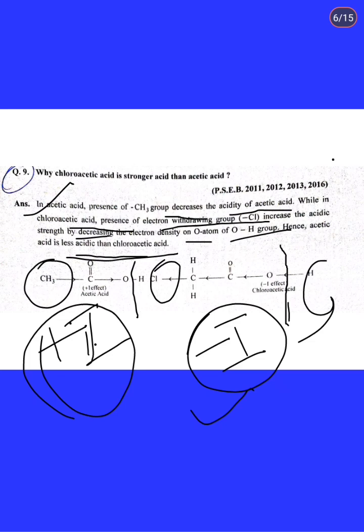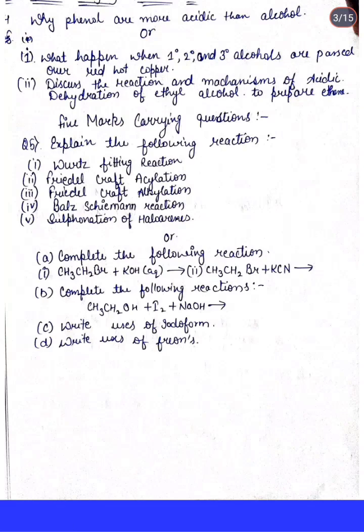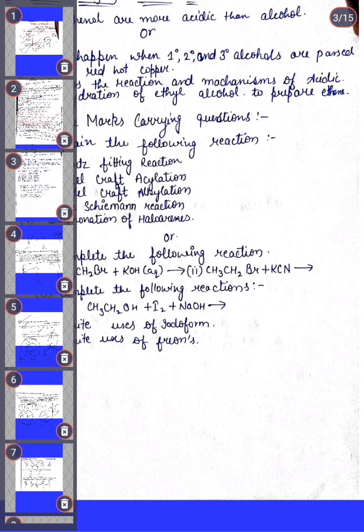Next are the three-mark questions. Option 1: Why are phenols more acidic than alcohols? Option 2: What happens when primary, secondary, and tertiary alcohols are passed over red hot copper? Option 3: Discuss the reaction and mechanism of acidic dehydration of ethyl alcohol.